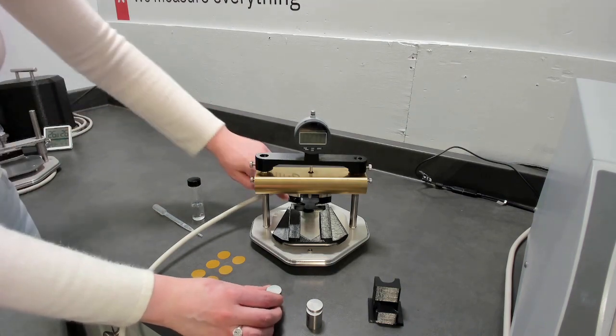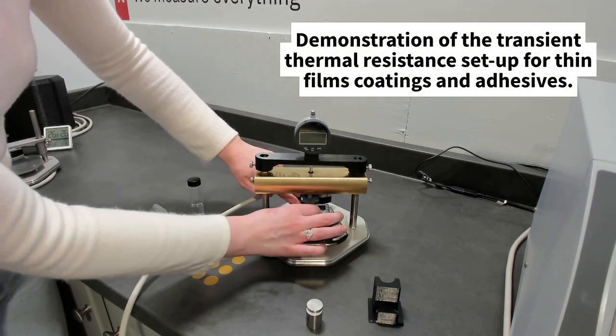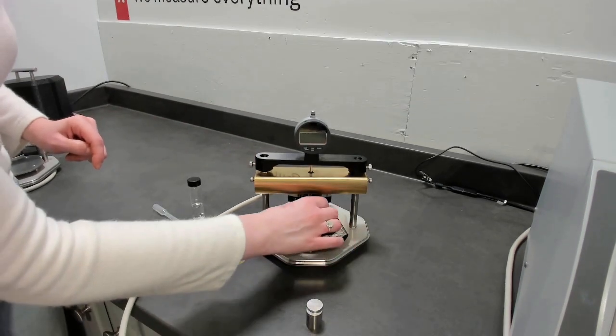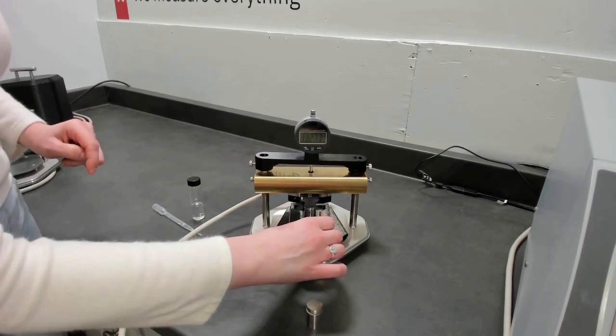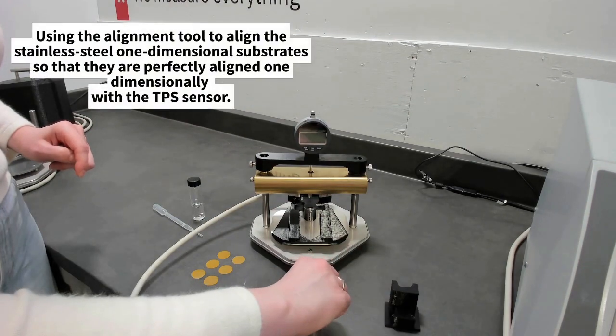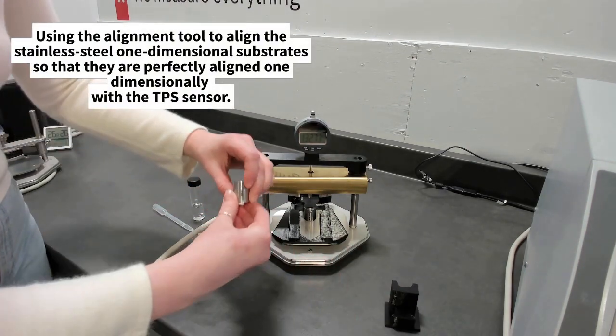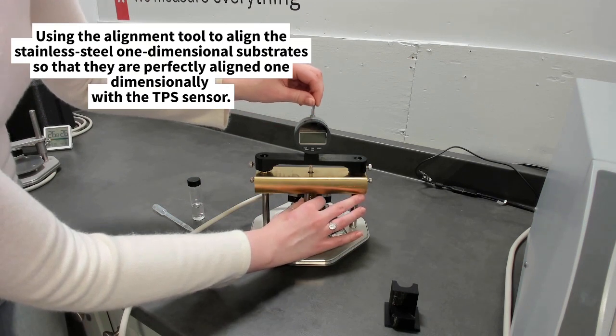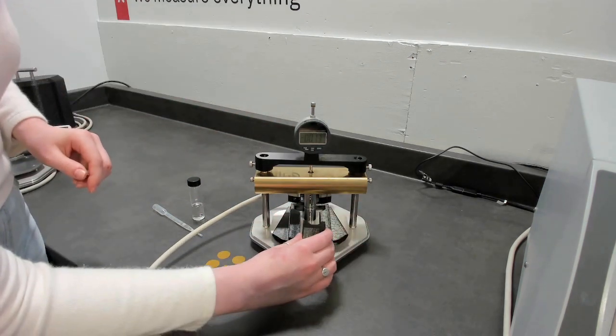This is a demonstration of the transient thermal resistance set-up for thin films coatings and adhesives. We're using the alignment tool to align the stainless steel one-dimensional substrates so that they are perfectly aligned one dimensionally with the TPS sensor.